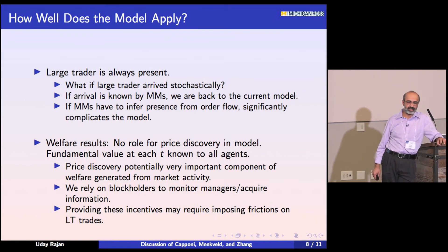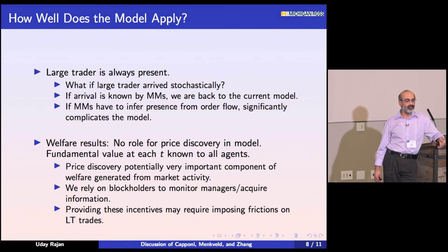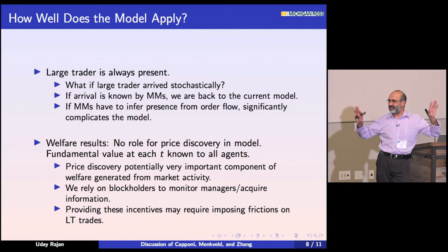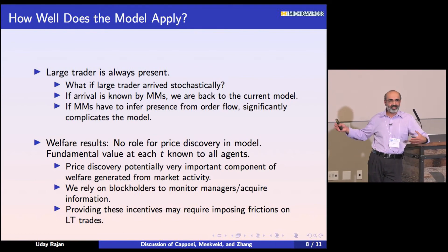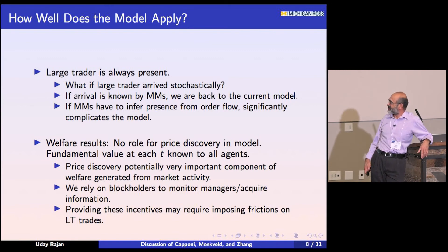One comment on the welfare results. This model has a large trader trading not for informational reasons. When we start thinking about welfare and what a regulator can or cannot do, it is important to remember that one of the big roles of the market is price discovery. Sometimes in finance we think it would be great to have a flat demand curve and frictionless markets, but when we think about incentives, frictionless markets are not necessarily the best thing. This large trader might be the person we rely on as a block holder to monitor the manager, or to acquire information about the firm. Giving them an incentive — making it a little bit costly to exit — might not be such a bad thing.